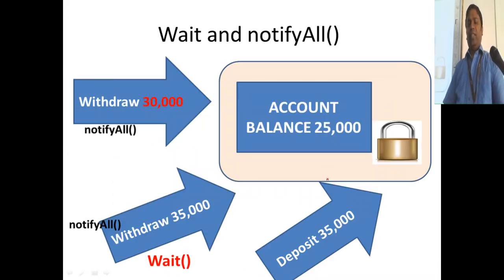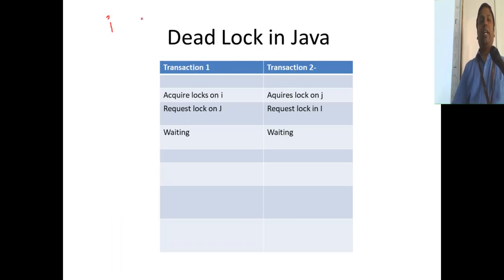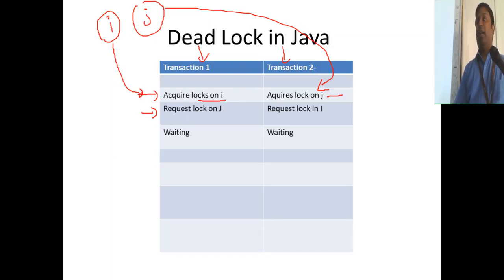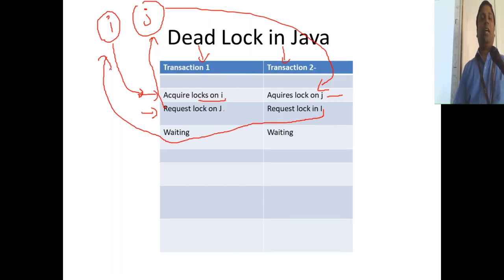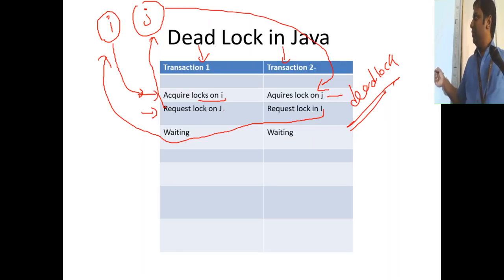So notify and notifyAll are done. Now let's look at deadlock in Java. Say we have two objects — object i and object j. There are two threads running in parallel. Thread one acquires the lock on object i, and thread two acquires the lock on object j at the same time. Then thread one, while holding the lock on i, requests a lock on j. Thread two, while holding j, requests a lock on i. Both are waiting for each other — that is a deadlock.